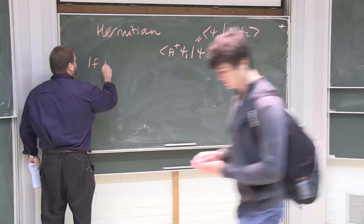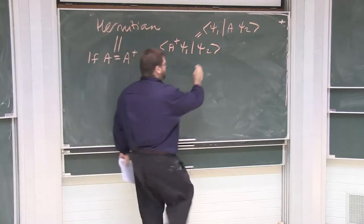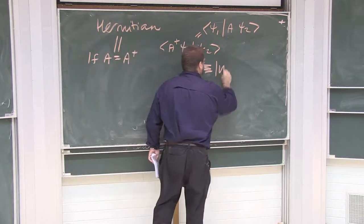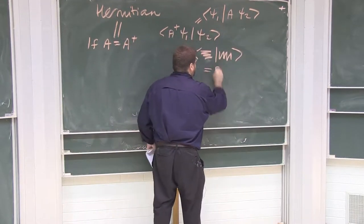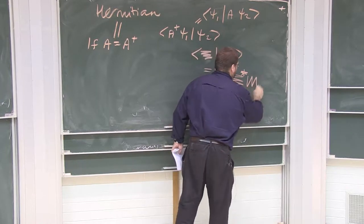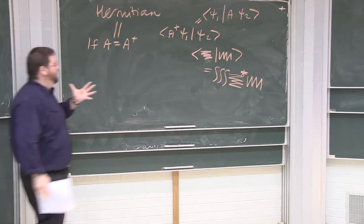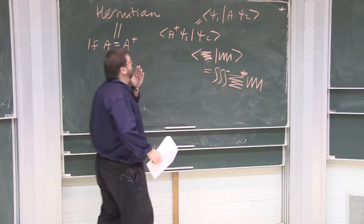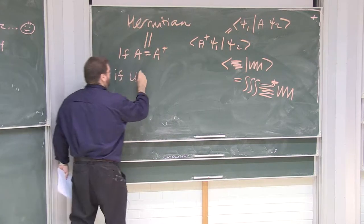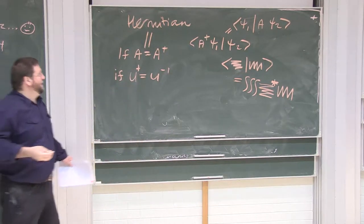Now if an operator equals its Hermitian conjugate, then we speak of it as being Hermitian. The Dirac notation — if you have the Dirac notation of a bra-ket, this is equivalent to integrating over all space. The first slot, whatever's in there, you star it. The second slot, whatever's in there, you leave it alone and you integrate over all space. So this is what we mean by the essence of Dirac notation. We'll use this repeatedly. The last thing I want to mention is a unitary operator: if an operator's dagger equals its inverse, then we speak of that operator as being unitary.